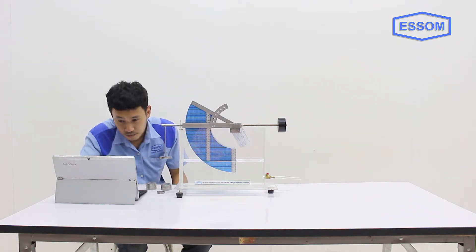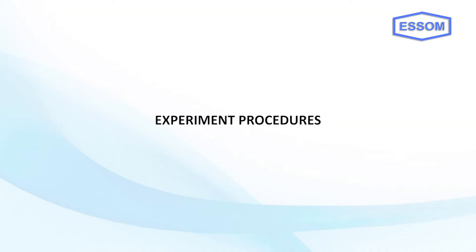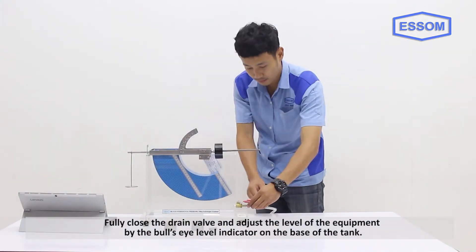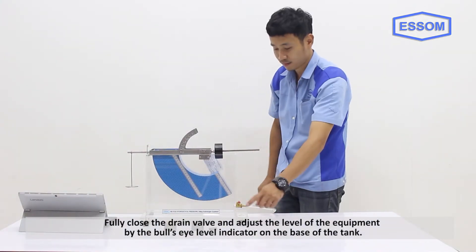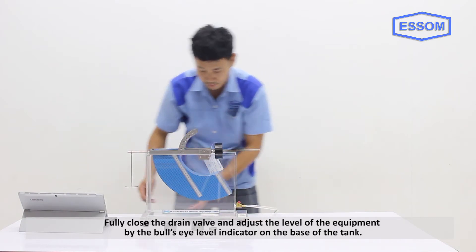Fully close the drain valve and adjust the level of the equipment by the bulls-eye level indicator on the base of the tank.